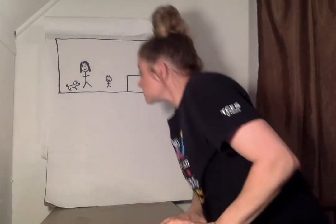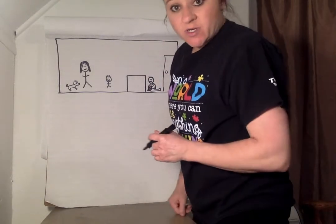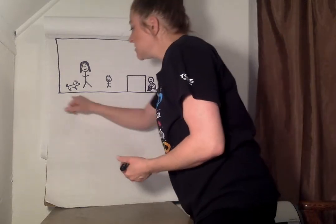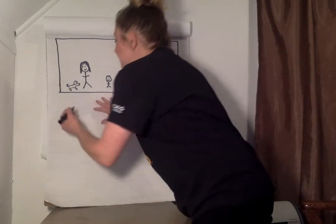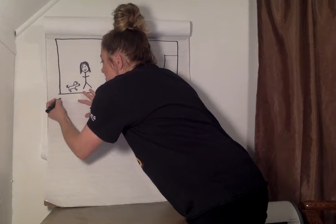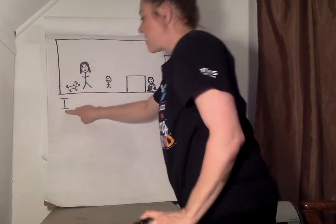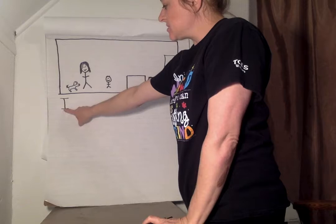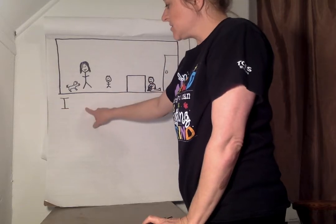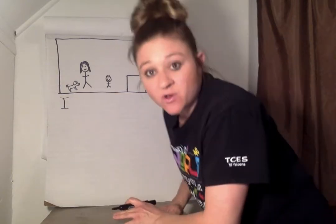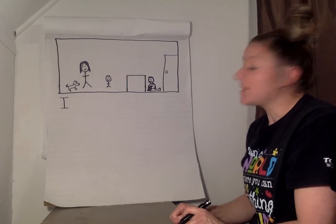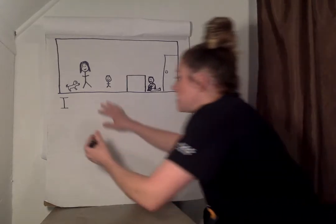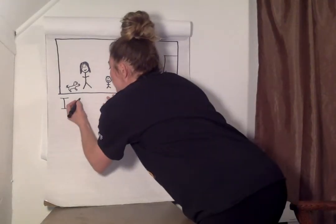The very first word is 'I,' and we know when it's by itself it's always a capital. So I'm going to write a capital I. What comes next is 'like.' Like is one of our sight words, so we know how to spell that. L-I-K-E, like.